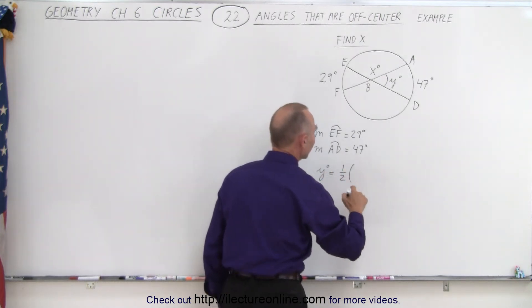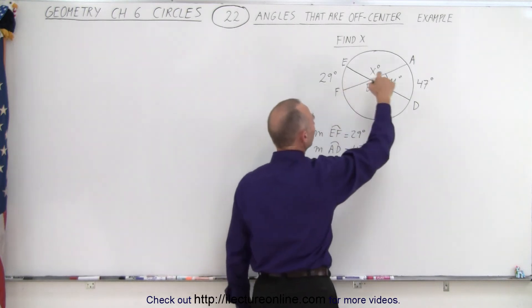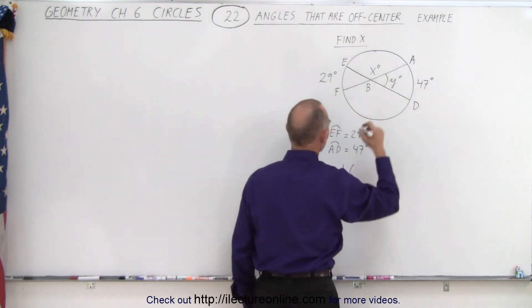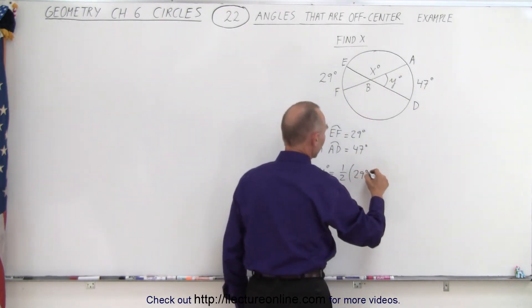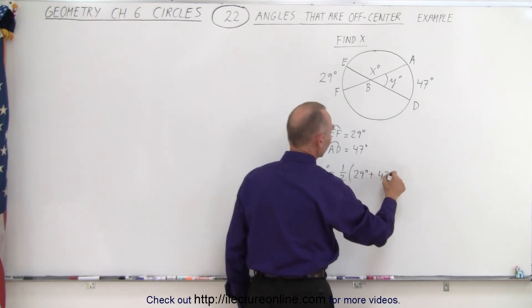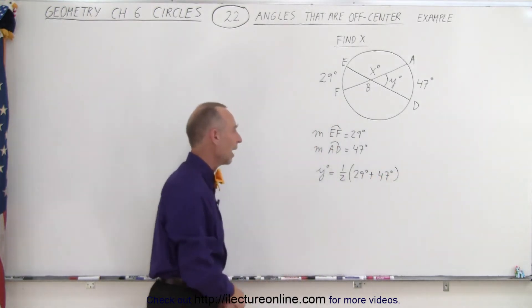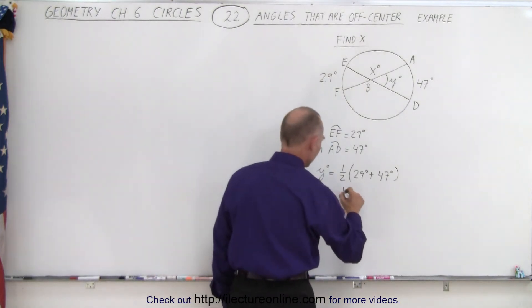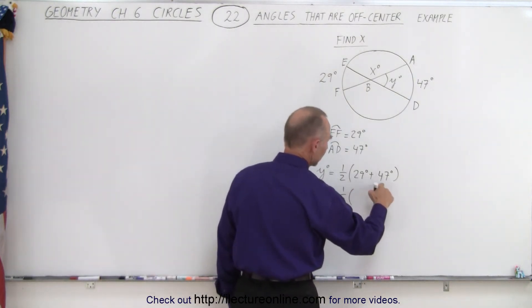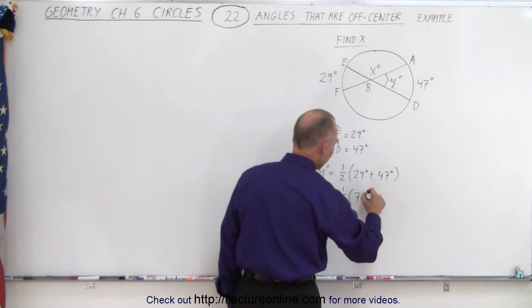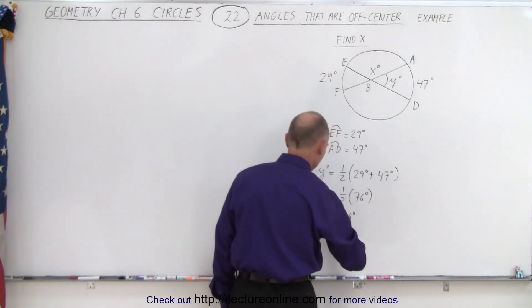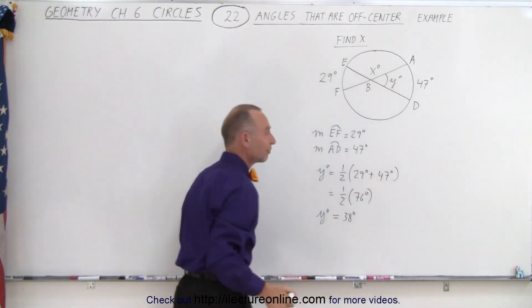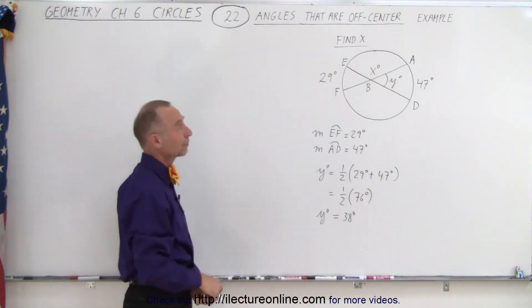One half times the sum of these two arcs, so that would be 29 degrees plus 47 degrees. This is equal to one half times 76 degrees, and half of that would be equal to 38 degrees. But that is the angle where I have the value for y, but I don't have the value for x.